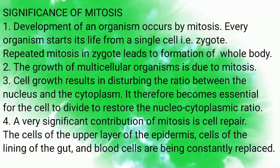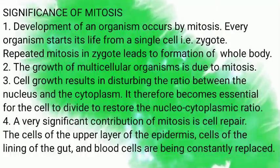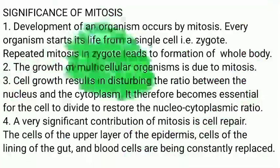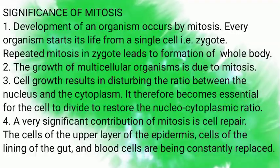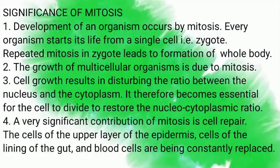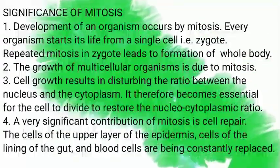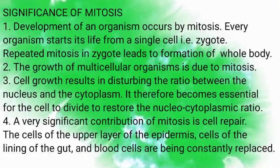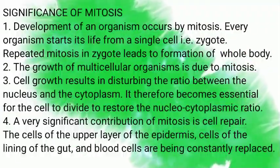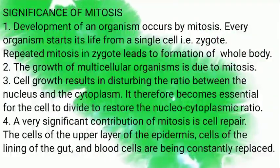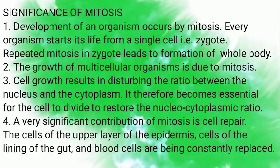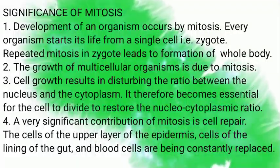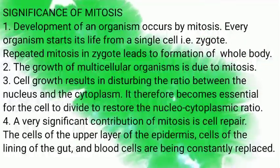Significance of mitosis: Development of an organism occurs by mitosis. Every organism starts its life from a single cell called a zygote. Repeated mitosis in the zygote leads to the formation of the whole body of an organism. The growth of multicellular organisms is due to mitosis. Cell growth results in disturbing the ratio between the nucleus and the cytoplasm, and it therefore becomes essential for the cell to divide to restore the nucleocytoplasmic ratio.